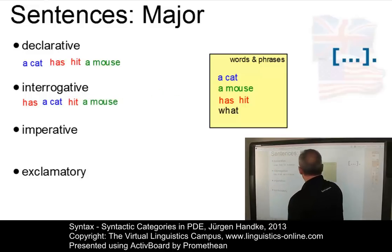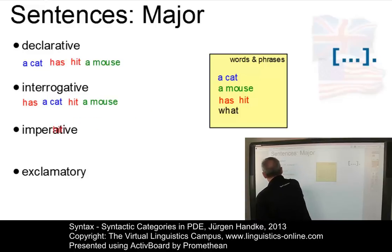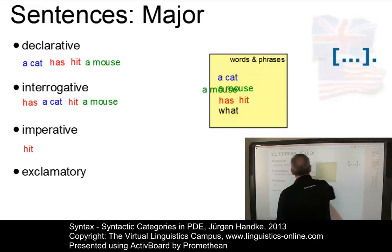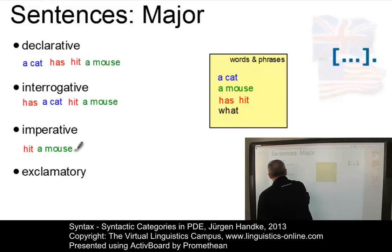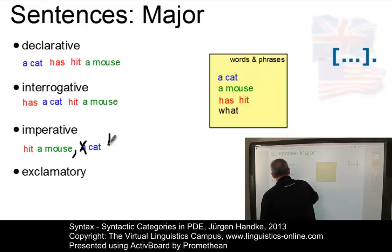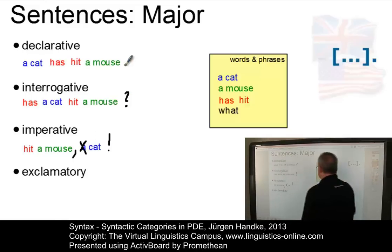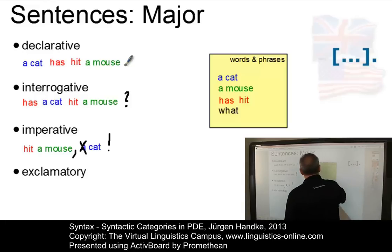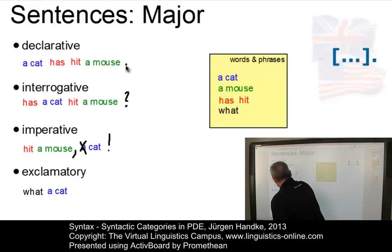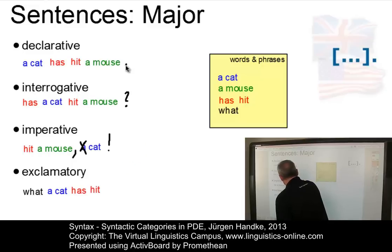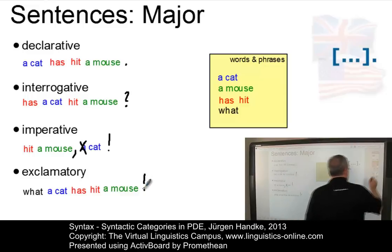In imperative sentences, the verb occurs in the initial position. There is no overt subject, so something like Hit a mouse would already be a sufficient imperative sentence. We could also add an overt subject such as Hit a mouse, cat. And finally, an exclamatory sentence is almost identical with a declarative sentence, except we have a WH element in the initial position: What a cat has hit a mouse!